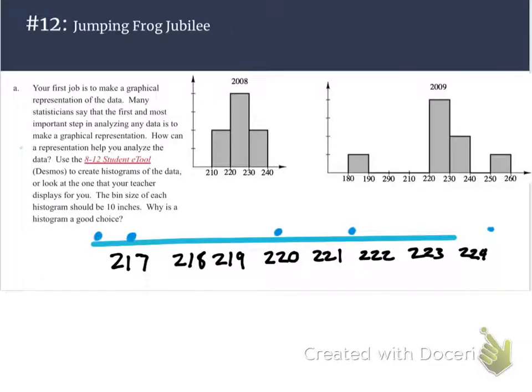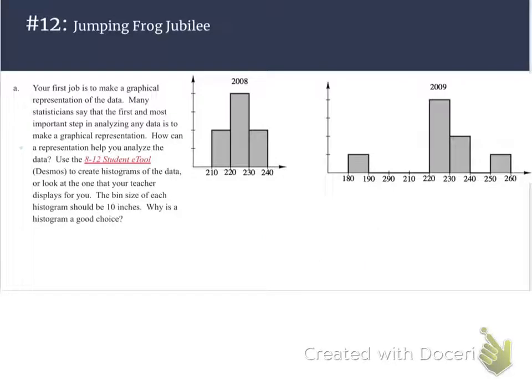There'd have to be a lot of repeating data entries, or the data would have to be closer together. So in this case, a dot plot wouldn't be that helpful. So we go back to the question, why is a histogram a good choice?